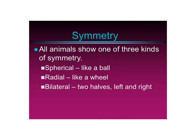Another thing that animals share is that they show one of three kinds of symmetry. Spherical symmetry means it looks like a ball — it's symmetrical in all directions. Radial symmetry is like a wheel: symmetrical around but not in every dimension. And bilateral symmetry means you can divide the animal into two halves — a left and right side.